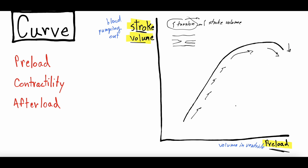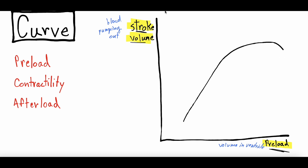So once the volume filling that ventricle before it contracts is too much, it stretches those fibers so far that they become over-tensed and overstretched, and they cannot contract robustly. The stroke volume starts to decrease. That's the normal Frank-Starling curve: more preload gives more stroke volume up to a point, then overstretching leads to decreased stroke volume — also described as increased end-diastolic volume, diastole being the filling phase before the ventricle squeezes in systole.